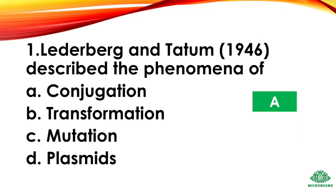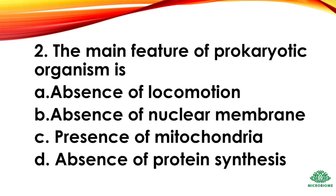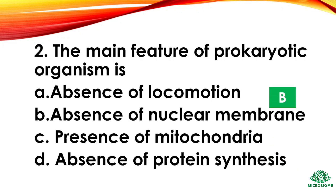Question 2: The main feature of a prokaryotic organism is — options: absence of locomotion, absence of nuclear membrane, presence of mitochondria, absence of protein synthesis. The right answer: option B, absence of nuclear membrane.